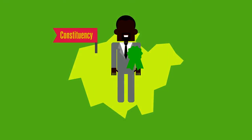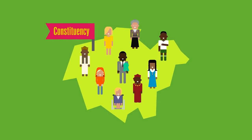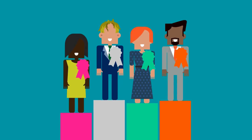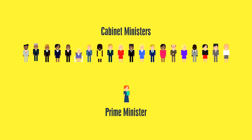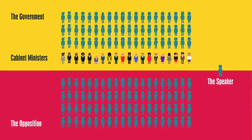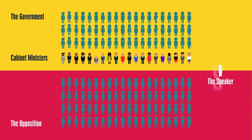MPs belong to either a political party or are independent, and are elected by constituents of the area they want to represent. The leader of the party that has the most MPs elected after a general election becomes the Prime Minister and heads up the government. They choose a cabinet made up of 20 senior ministers, who coordinate each government department's work. Parties not in power are called the Opposition. MPs from the Opposition and Government question the government on policy and proposed laws. The Speaker keeps the House in order by chairing these debates.